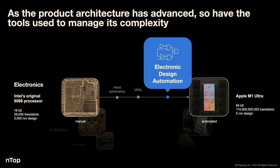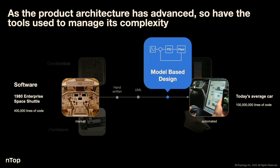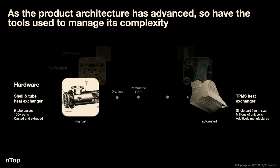Similarly in software: the 1980 Enterprise Space Shuttle had 400,000 lines of code, mostly handwritten logic. Today's average car has 100 million lines of code — only achievable by abstracting the design space with model-based design principles. We believe the same principle needs to be applied to hardware design. A typical heat exchanger has hundreds of parts, casted and extruded with traditional manufacturing. To increase scale and get full unit cells within it isn't possible with traditional CAD today — generative design is a necessary tool, coupling geometry, simulation, and manufacturing together in a loop.